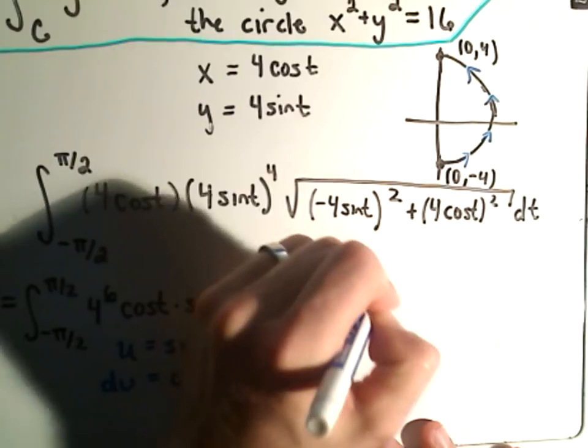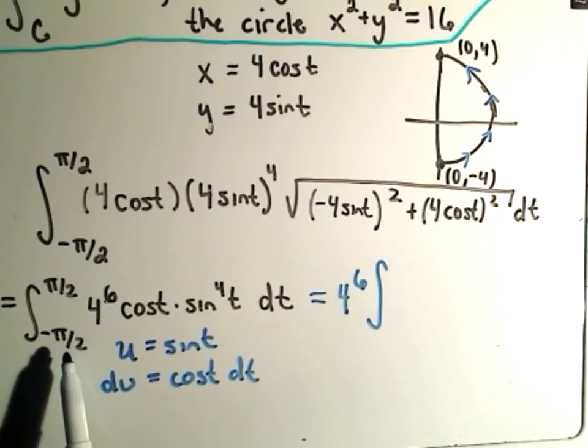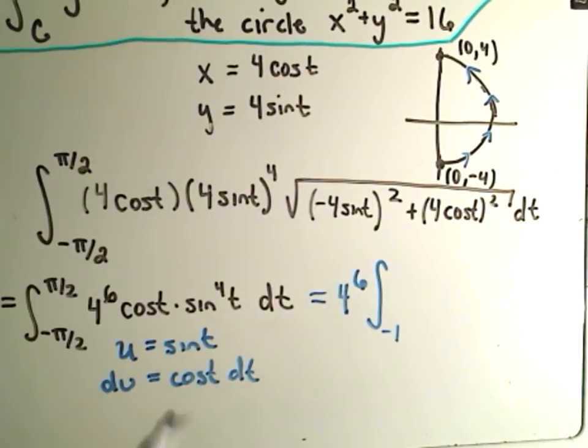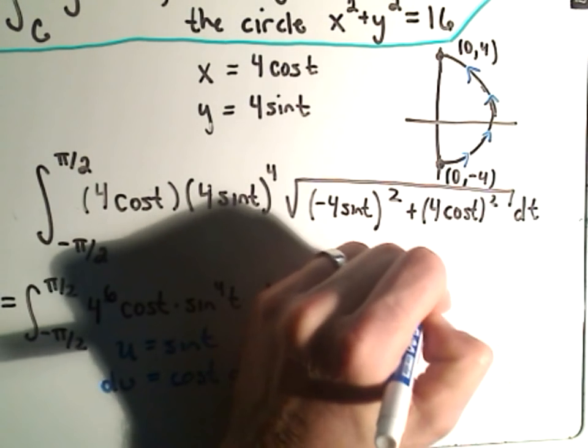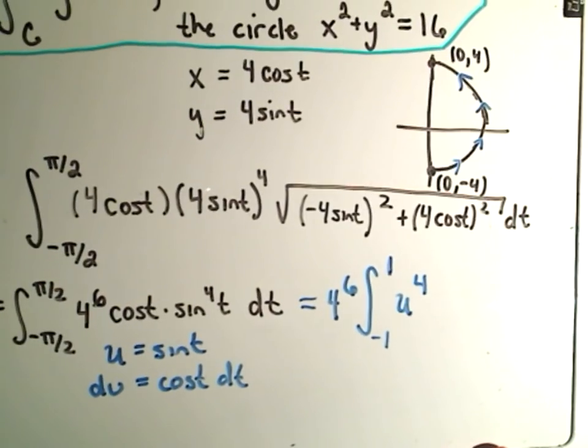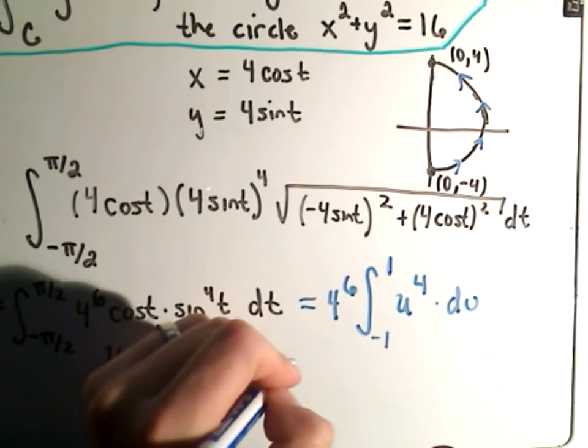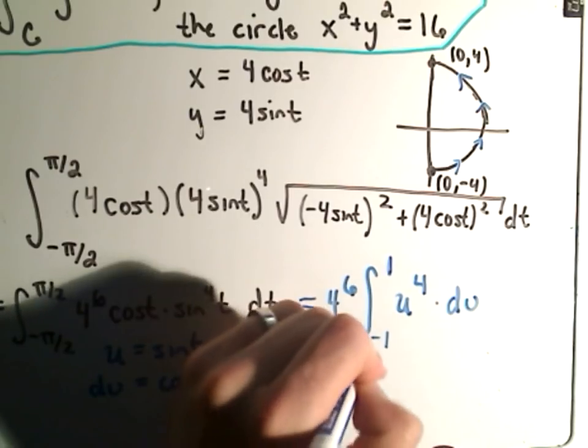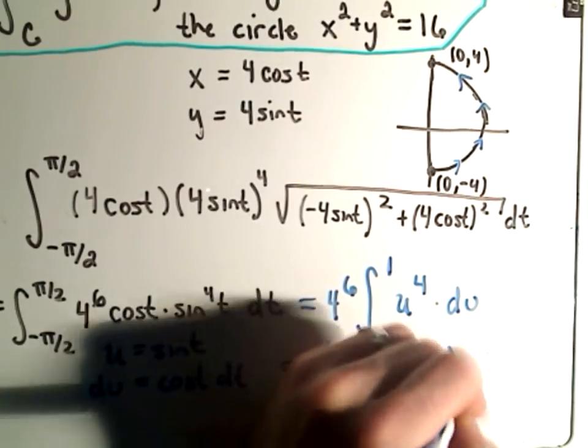I'll pull the 4^6 out front. We know that sin(-π/2), if I change my limits of integration, that gives us -1. If I plug in π/2, sin(π/2) is positive 1. Again, u is equal to sine, so I'll get u^4. And then I have my du taking care of the cos(t) dt term. So I've just got 4^6 u^4 times du. I can integrate that now. That's 4^6 times u^5/5, evaluated from -1 to positive 1.